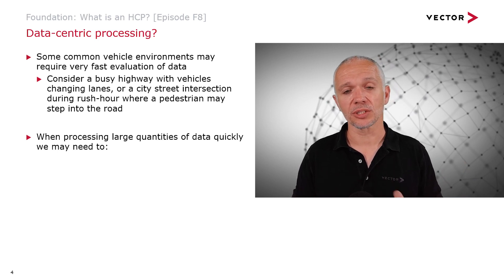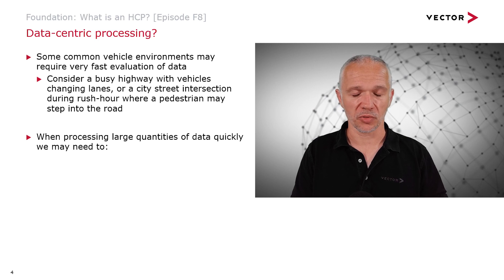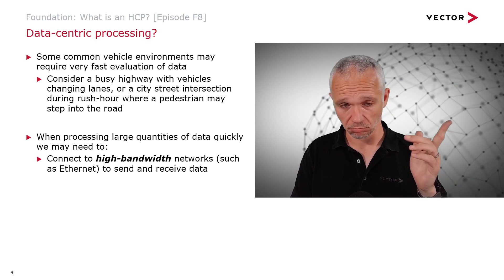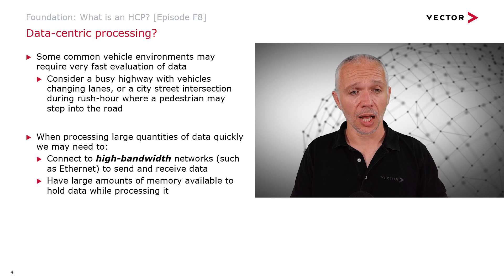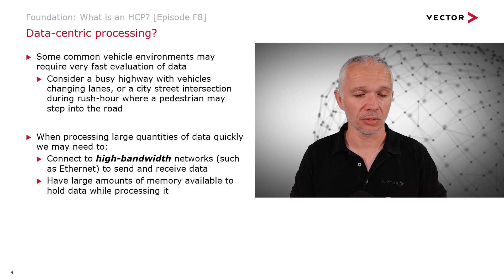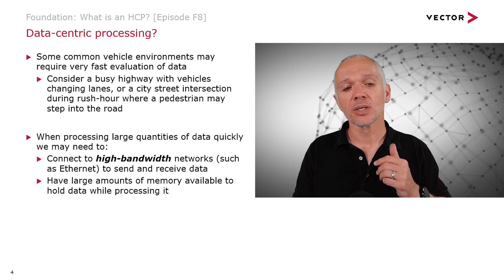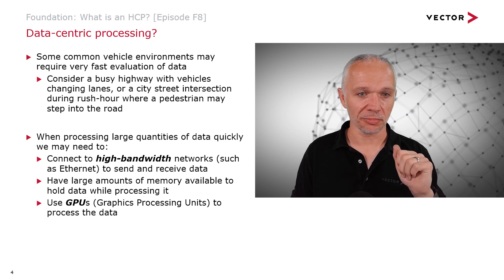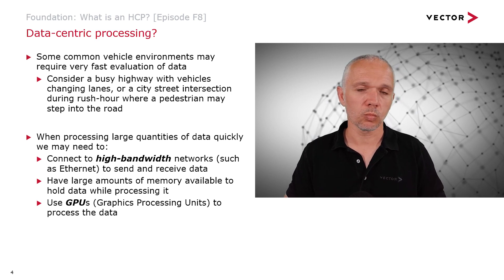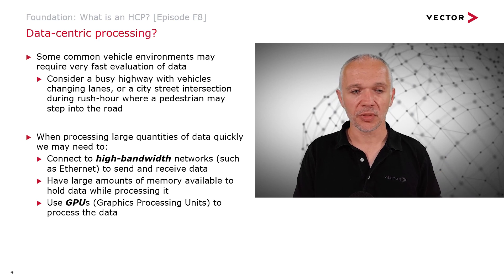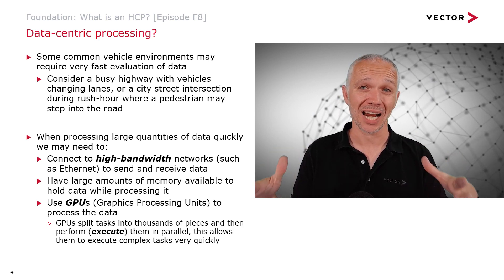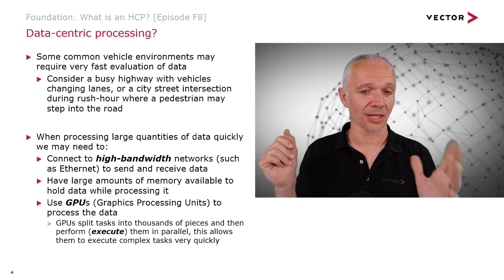When processing large quantities of data quickly, there are a couple of things we may need. We may need to connect to high bandwidth networks, such as Ethernet, to send and receive data. We may also need large amounts of memory available to hold that data while we're processing it. And — perhaps less obvious — we might want to use GPUs, or graphics processing units, to process the data. GPUs split tasks into thousands of pieces and then execute them in parallel, which allows them to execute complex tasks very quickly.